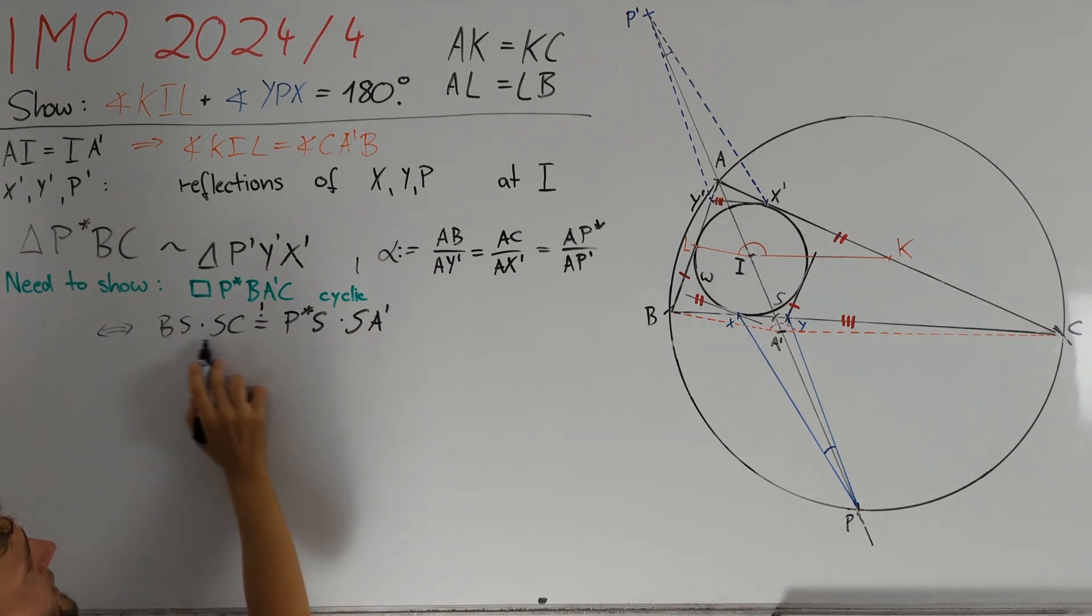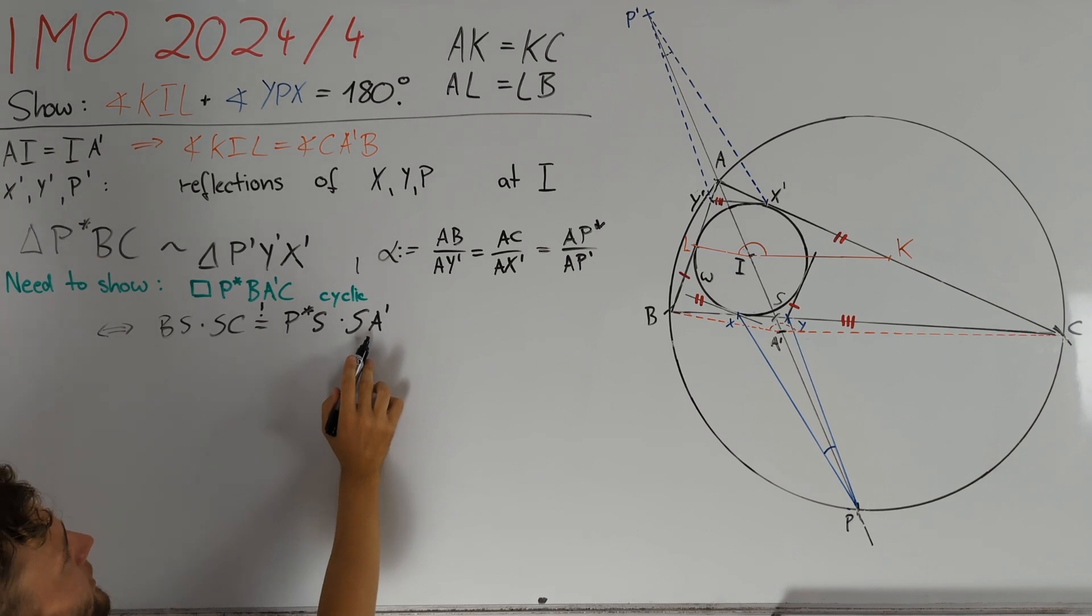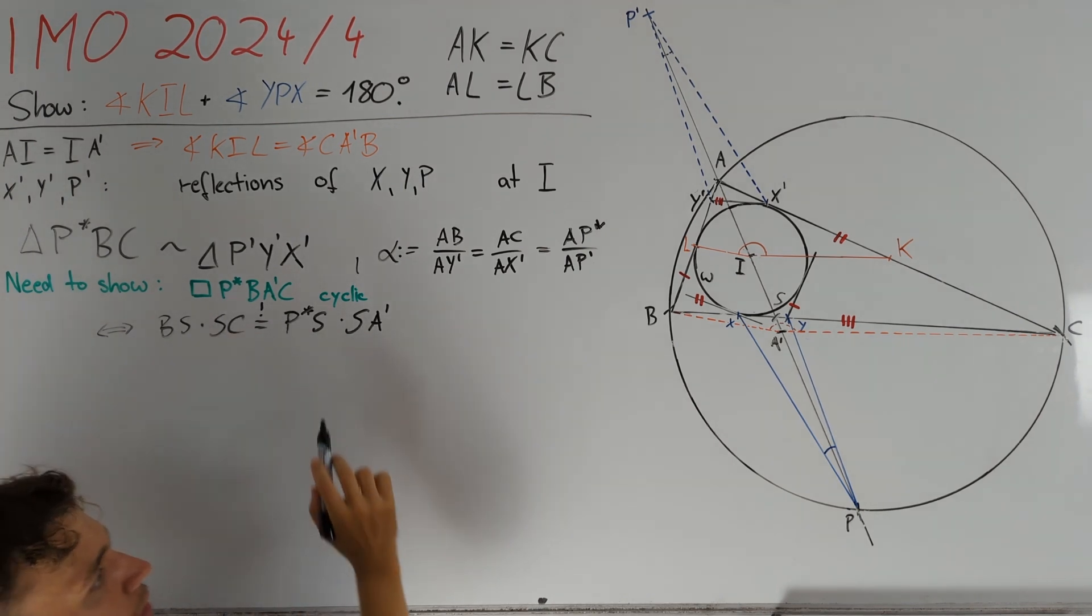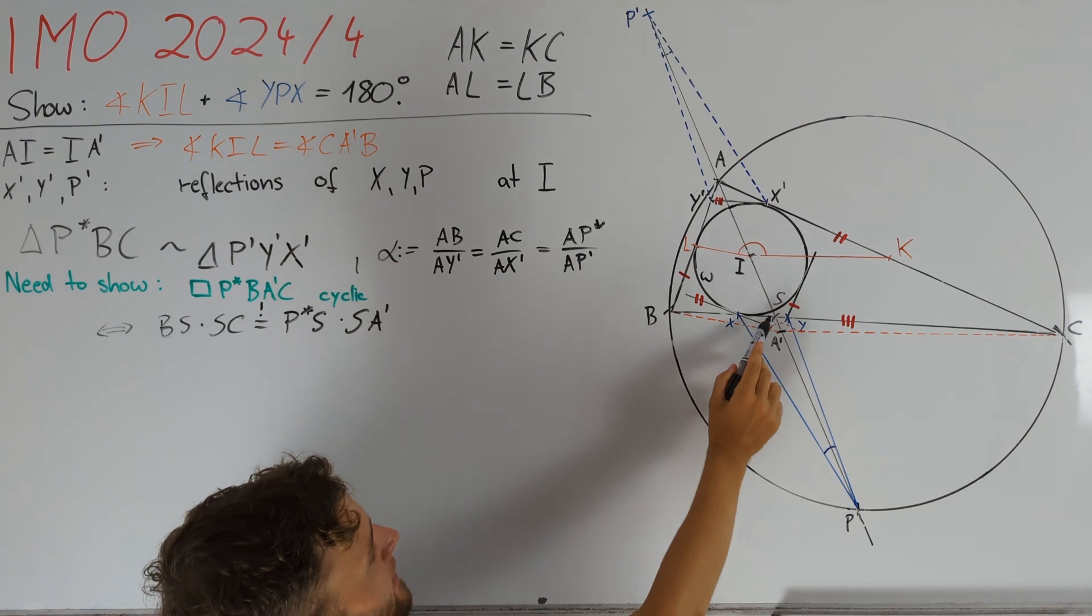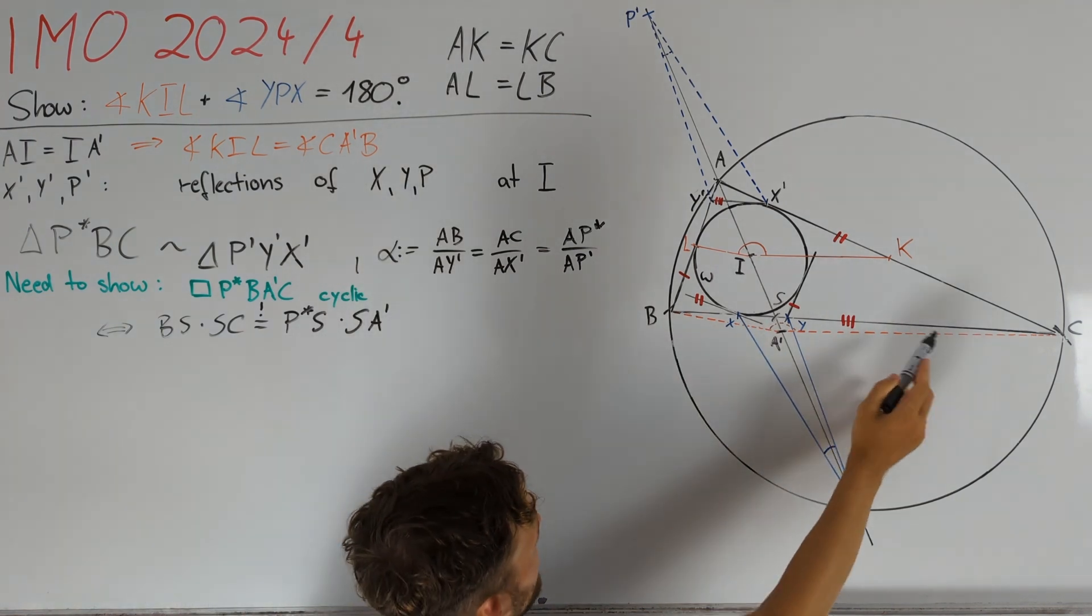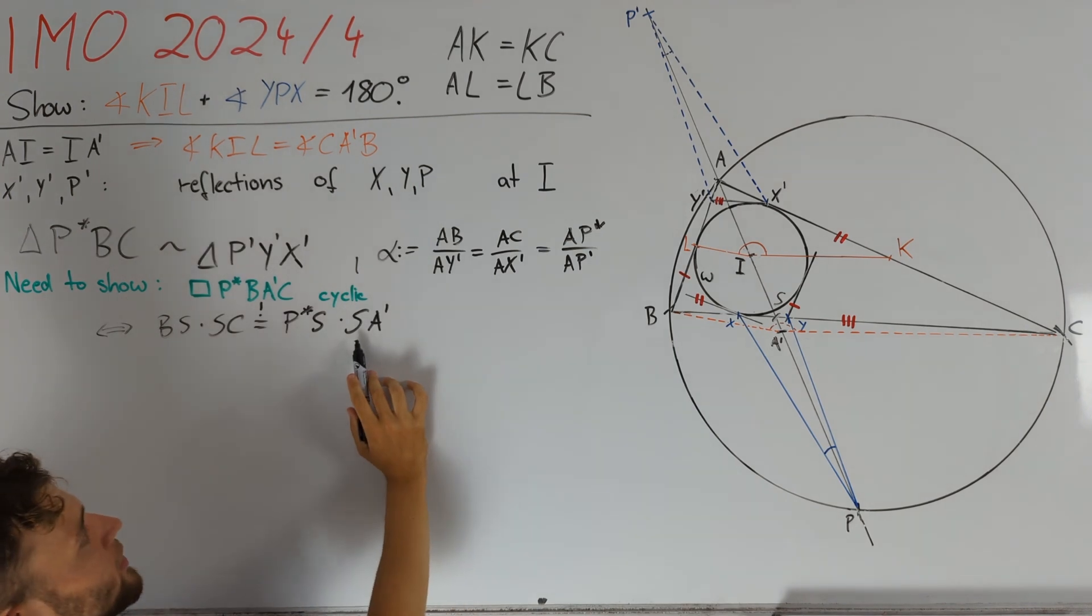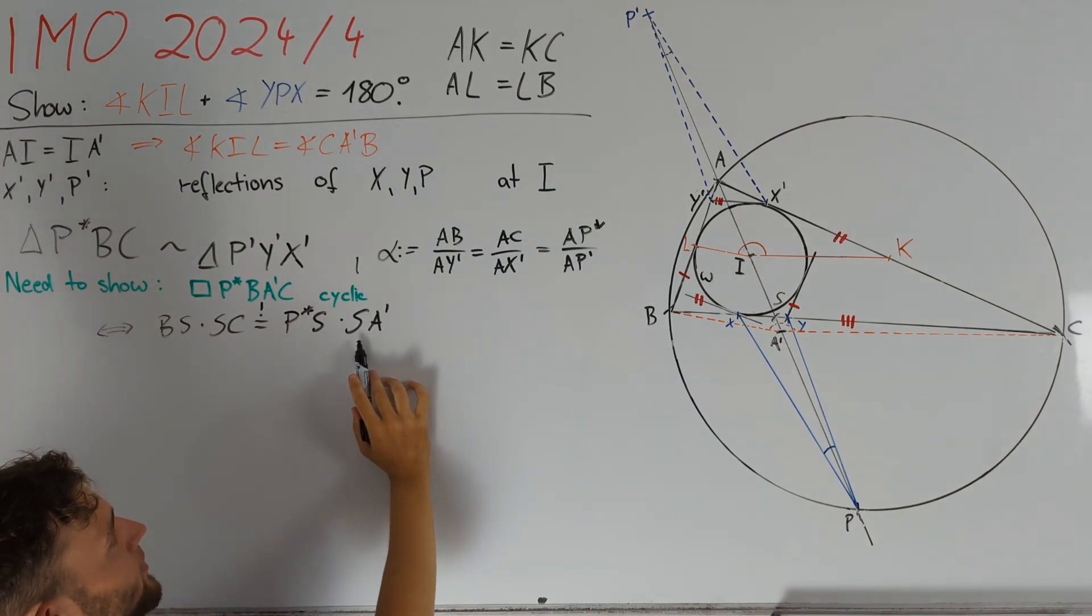Note that to be able to apply power of a point, we need these two signed products to be equal to conclude that our quadrilateral is cyclic. But we already know that S lies in the interior of BC and in the interior of A'P star, and therefore, we don't have to worry about signs from now on.